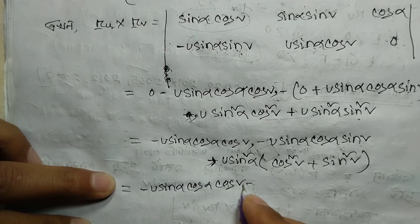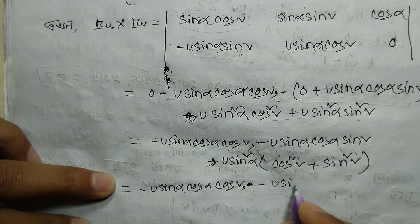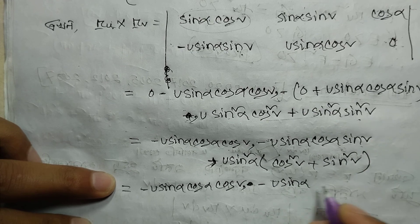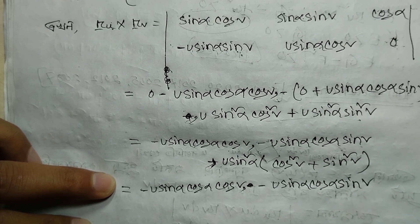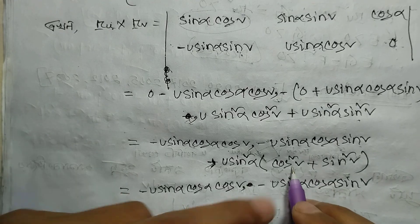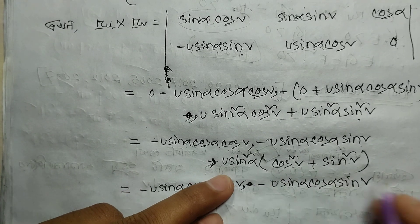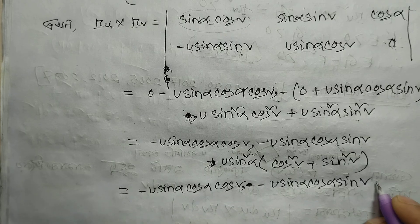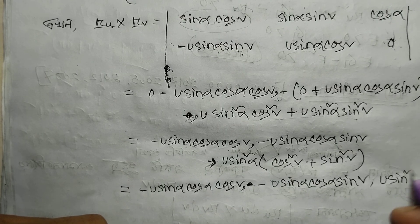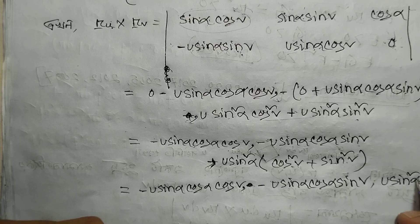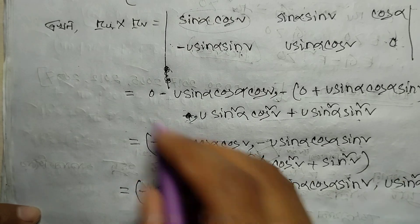We have minus u sinα — I think I made a mistake — sign alpha alpha sign okay. Plus one more component. It comes out to u sinα... sin squared alpha.